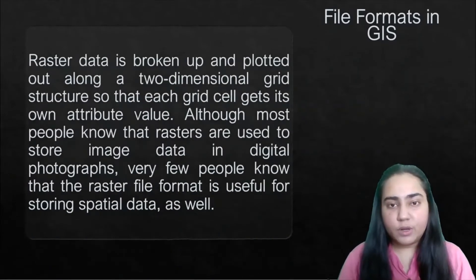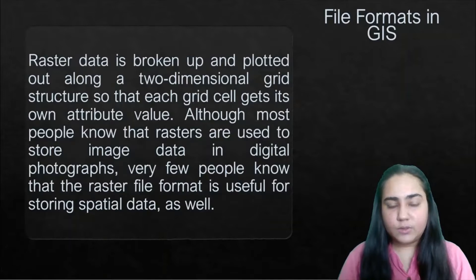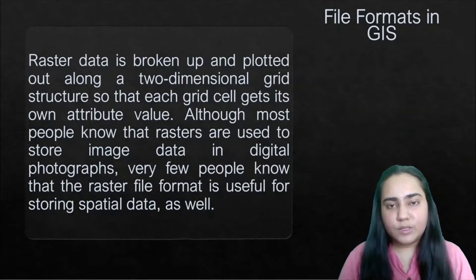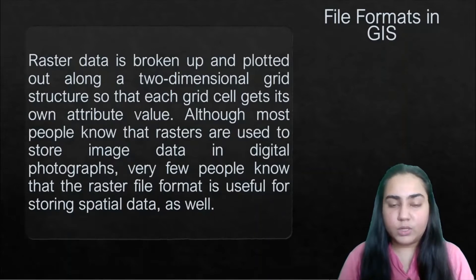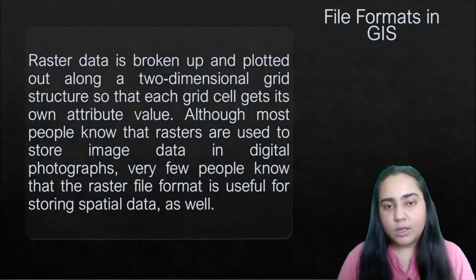Raster data is broken up and plotted along a two-dimensional grid structure so that each grid cell gets its own attribute value. It is a two-dimensional grid structure with boxes along the x and y axes. Think of it as a computer screen with pixels, or those old black-and-white video games on mobile phones — those used to have this type of format.